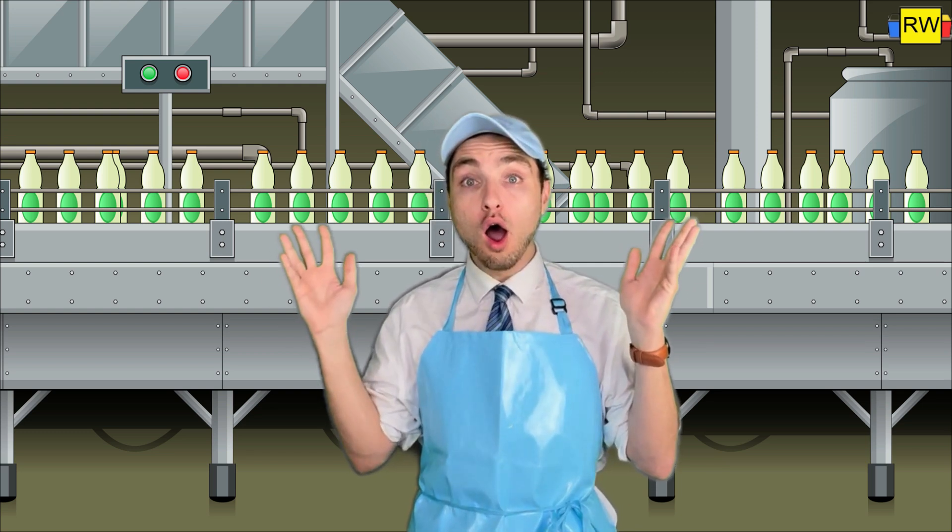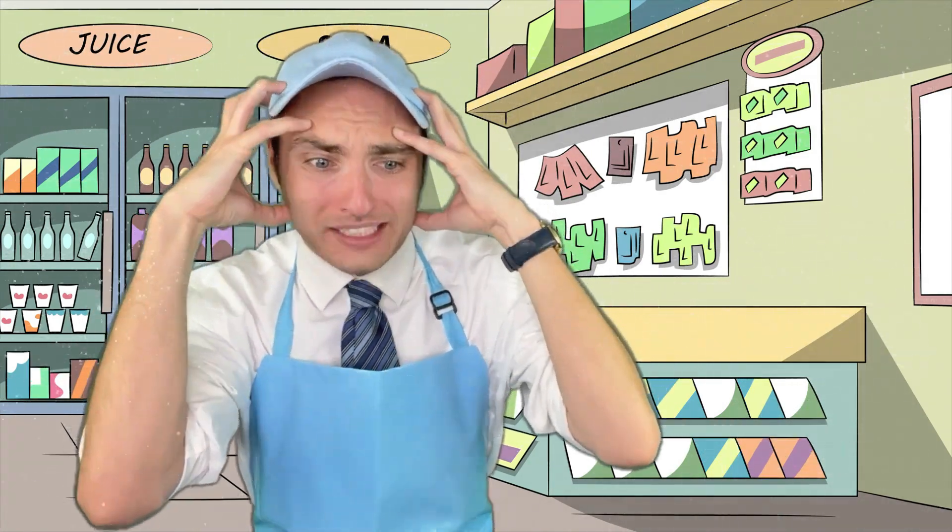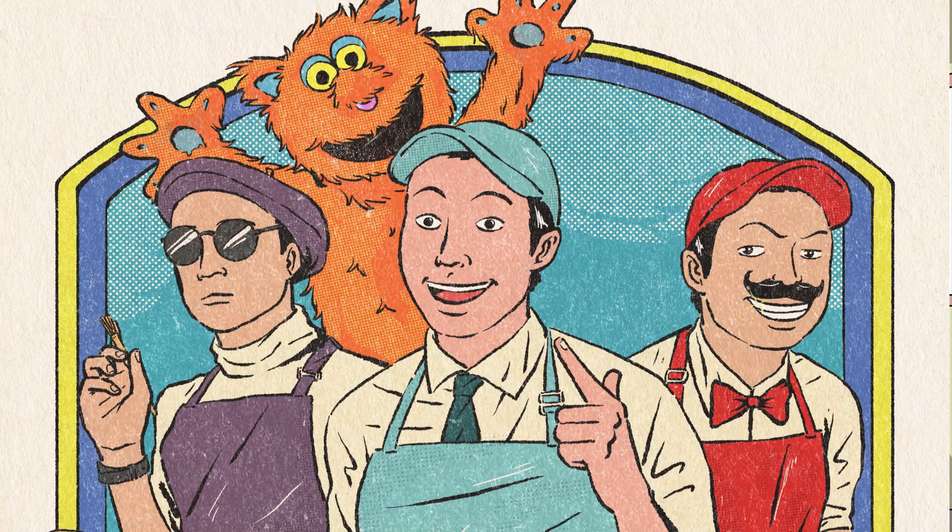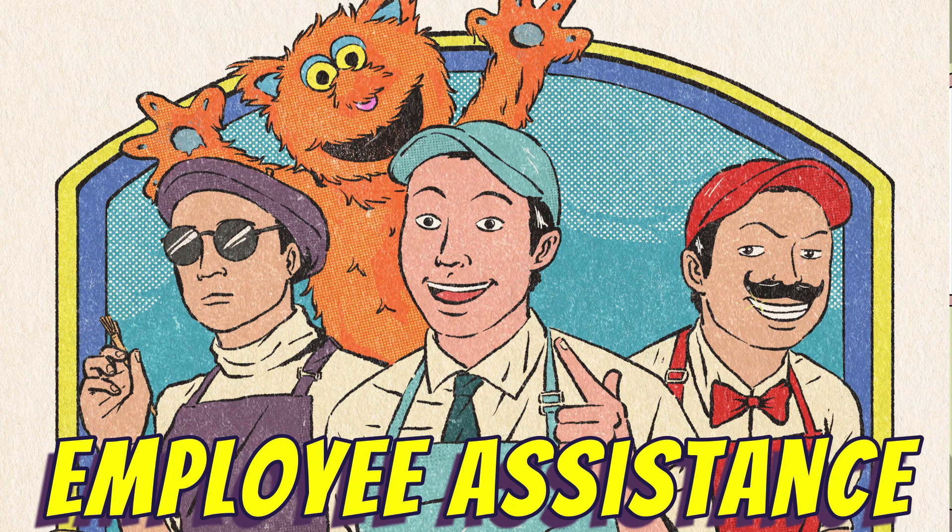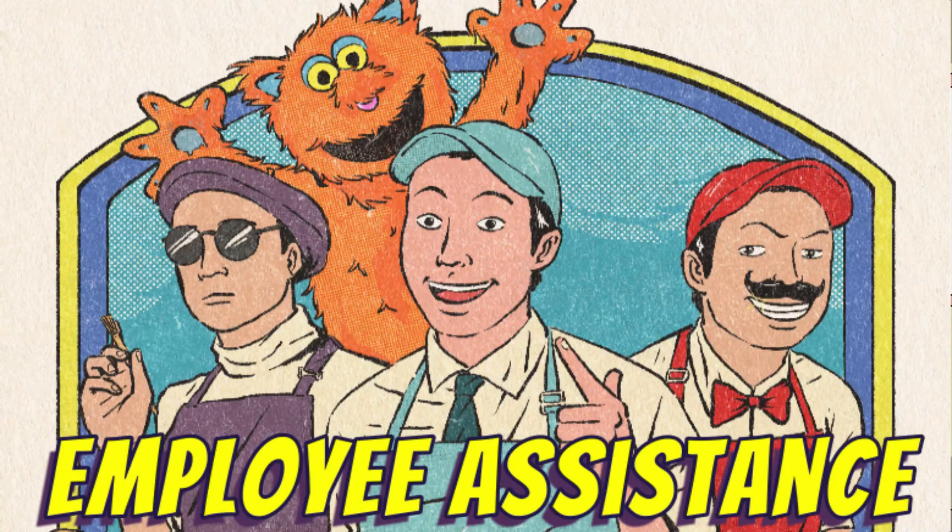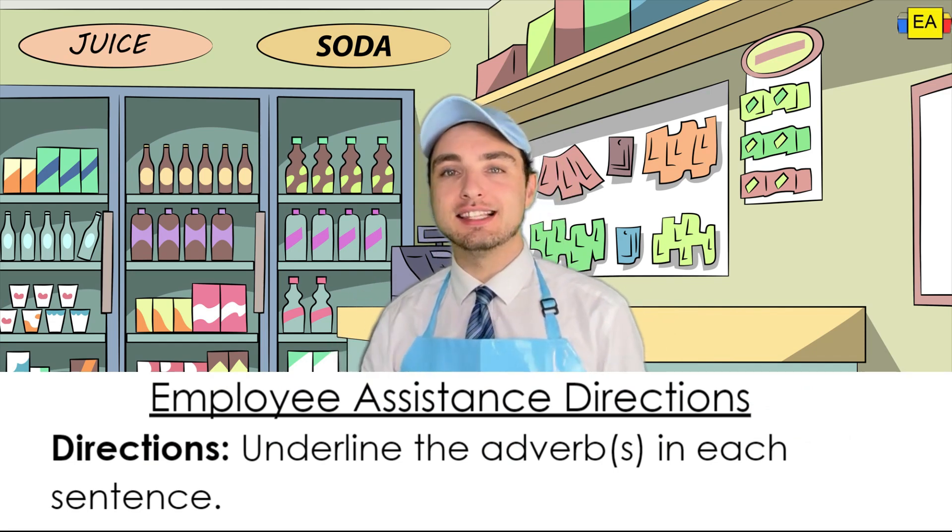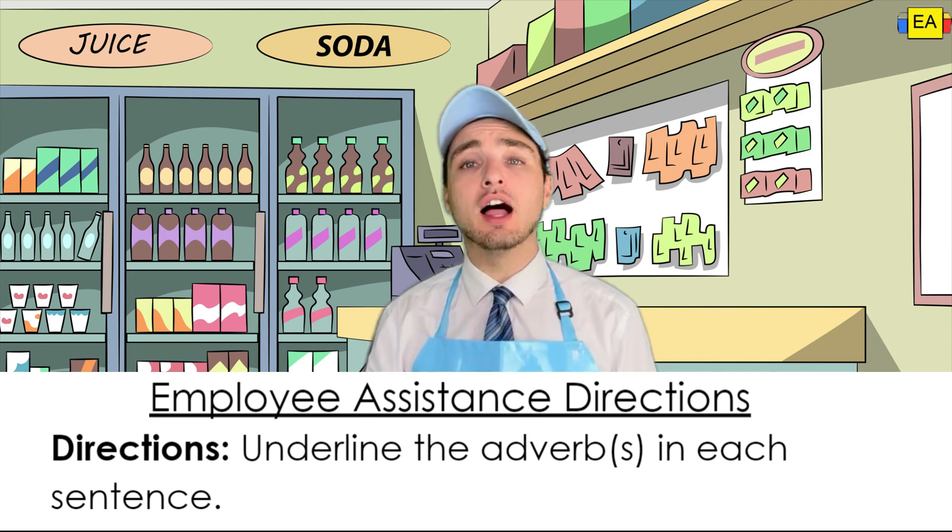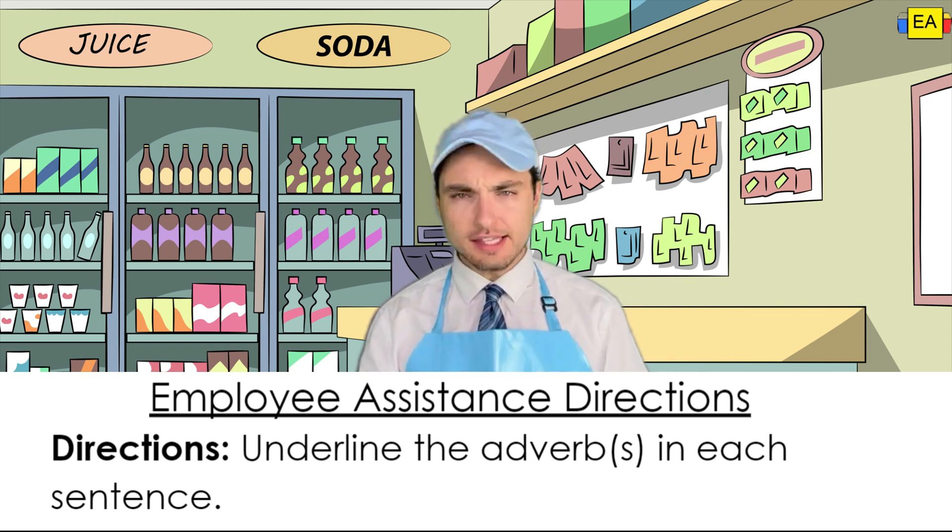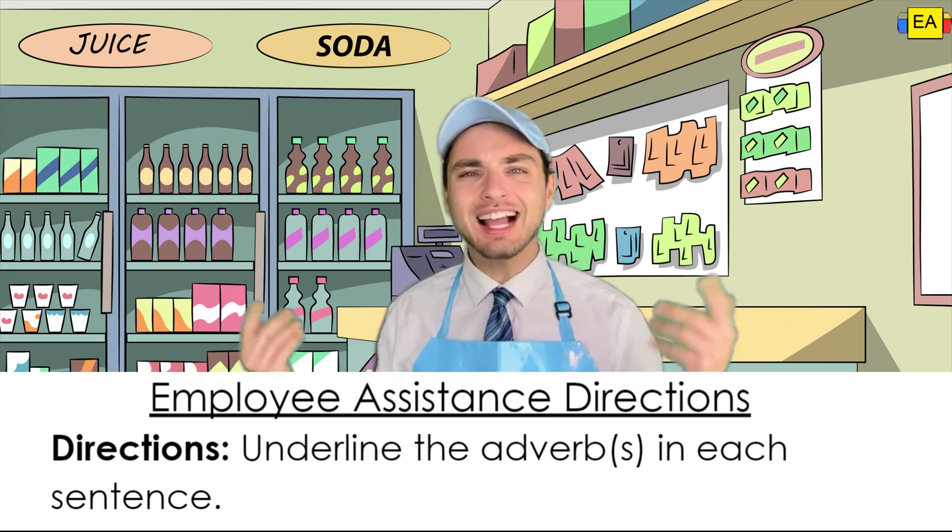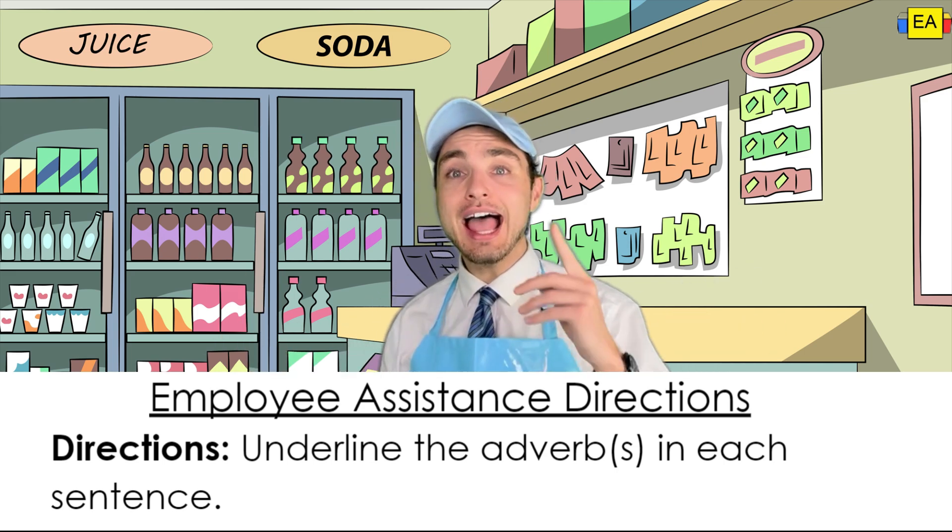So much grammar. My head's going to explode. I don't know what to do. I need help. We need some employee assistance. For this section, here's what's going to happen. I'm going to read various sentences. What you will do is underline the adverb or adverbs that appear in each sentence. Think you could do that? Underline the adverb or adverbs that appear in each sentence. I know you can. Let's do it!